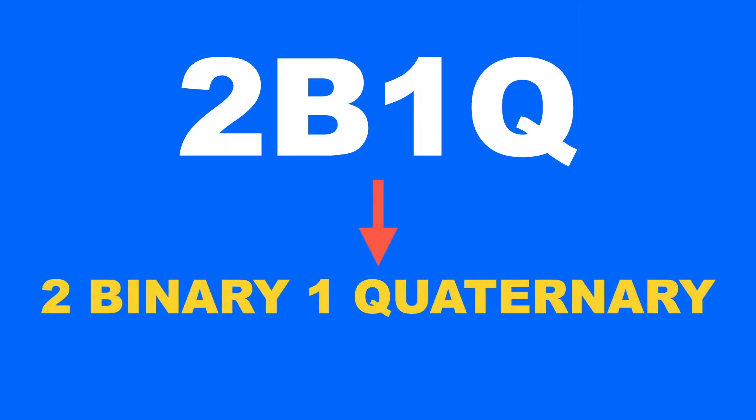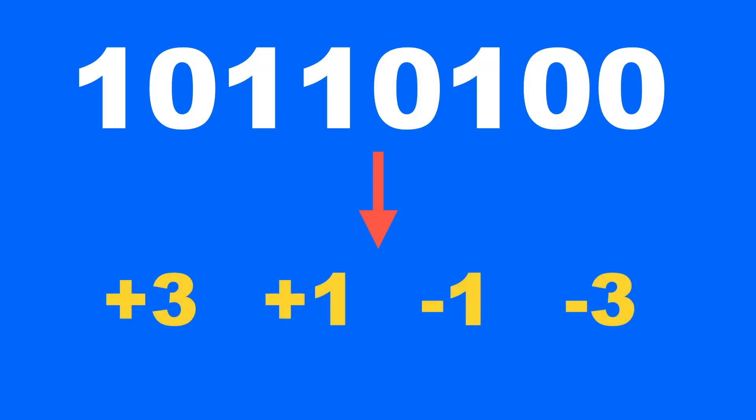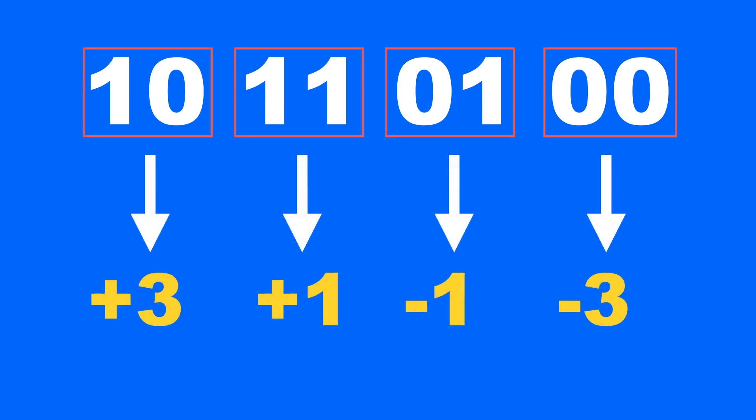2B1Q, or 2 binary 1 quaternary, is a line coding scheme that is used to represent binary data with quaternary signals. In this scheme, two binary bits are combined and represented as one of four possible quaternary symbols, depending on the bit pair.